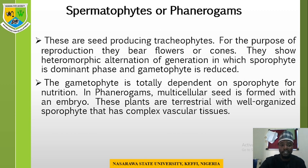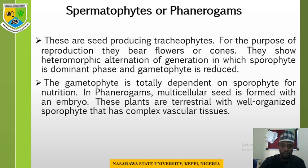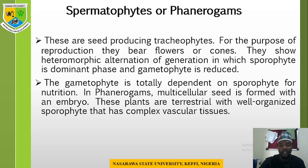For the spermatophyte in general, these are seed-producing tracheophytes — plants that have vascular bundles or vascular tissues. The vascular tissues are the transport tissues in plants, which are the xylem, responsible for the transportation of water, and the phloem, responsible for the transportation of already manufactured substances to where they are utilized within the plant body. For reproduction, they bear flowers or cones. They show heteromorphic alternation of generation in which the sporophyte is dominant and the gametophyte is reduced. The gametophyte is totally dependent on the sporophyte for nutrition.